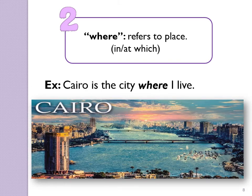Where is a relative adverb of place. For example: Cairo is the city where I live — it means this is Cairo, and this is the place where I live.